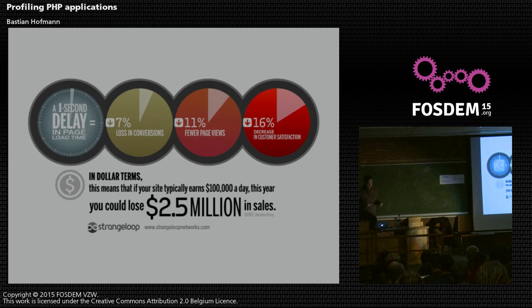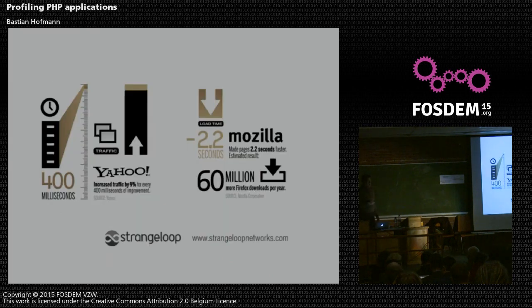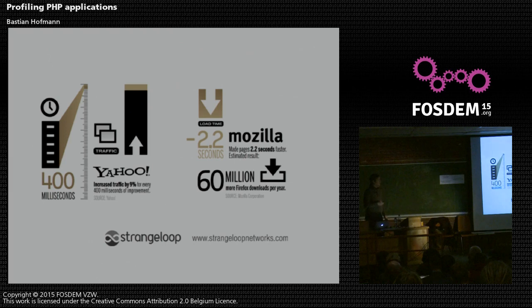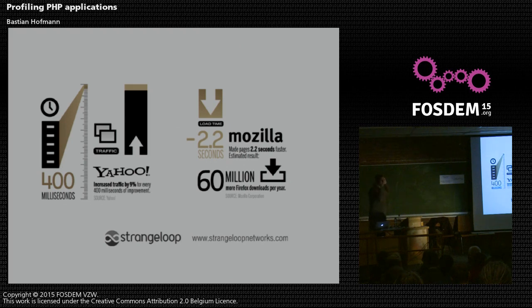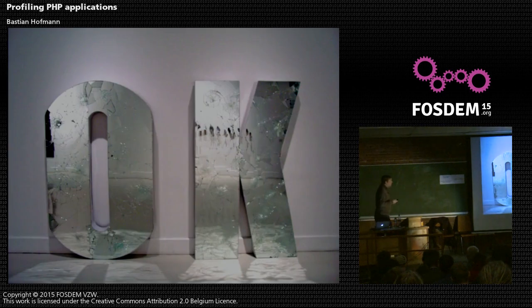Customers who are not satisfied usually don't come back — they go to your faster competitor. Yahoo tried making their homepage just 400 milliseconds slower for a subset of users, and that led to a 9% decrease in traffic in that group, and those users didn't come back. Mozilla sped up their Firefox download page by 2.2 seconds and saw 60 million more downloads as a result.